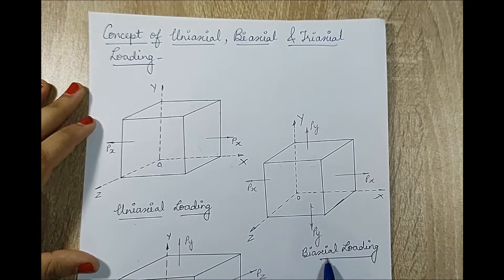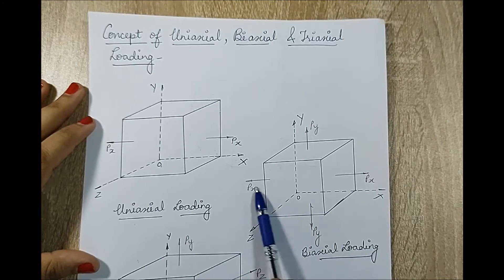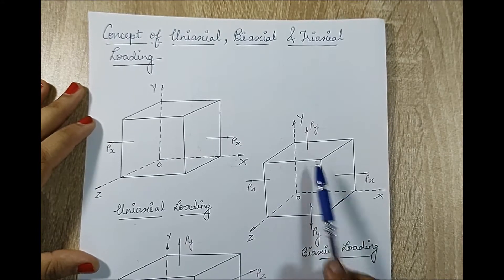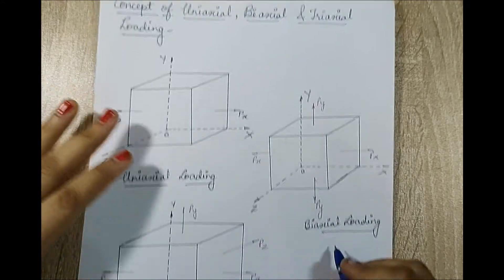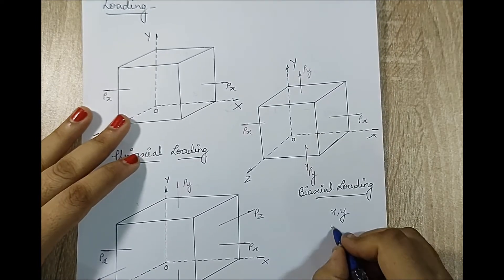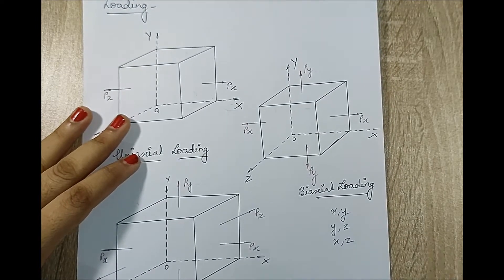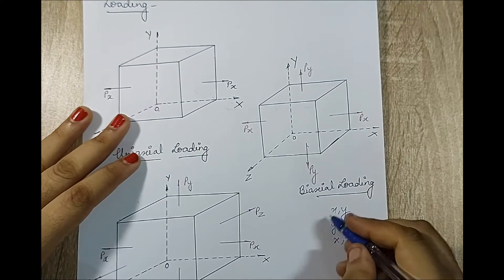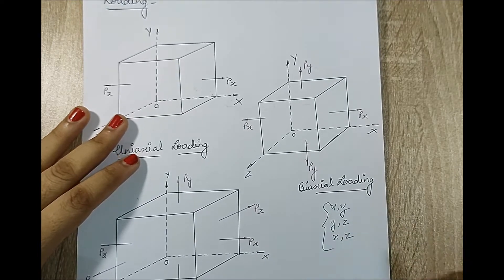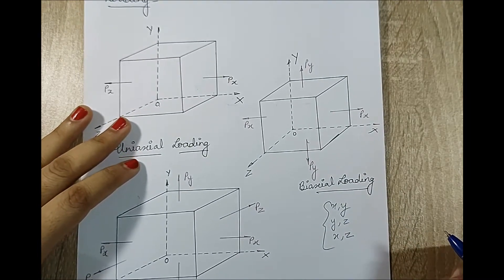Suppose the load is applied along two axes — for example x and y. It could be either x-y, y-z, or x-z — any one of the three combinations. In that case it is called biaxial loading.